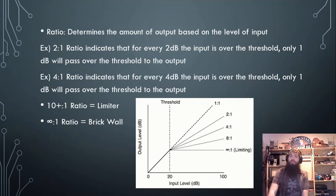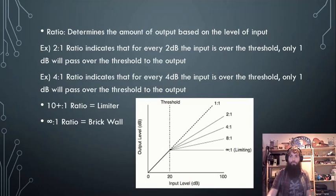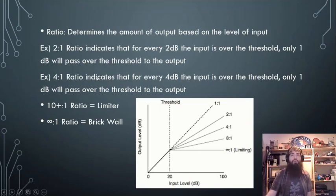Ratio determines the amount of output based on the level of input. Once the signal has gotten above the threshold, it's going to reduce in volume based on the ratio.